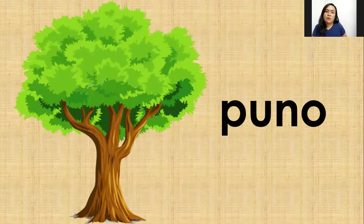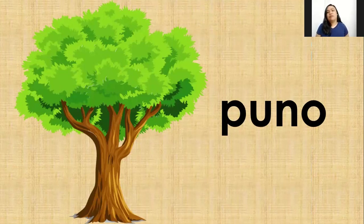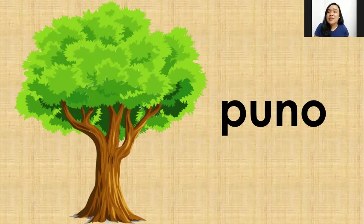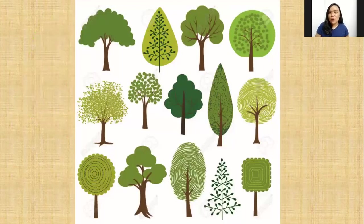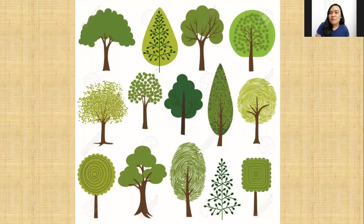Now we will be learning about the three main parts that make up our surroundings. The first one is the tree. Can you say tree? Very good. Tree is an English word — to teach you the Tagalog of tree, you have to say 'puno.' Can you repeat that? Puno. Very good! Puno means tree. Here are some other examples of puno that we have, and we can see that depending on where we are, some of them have different shapes.